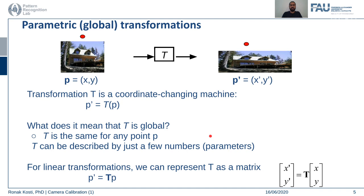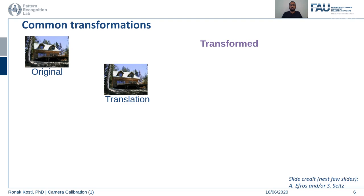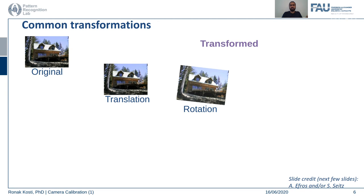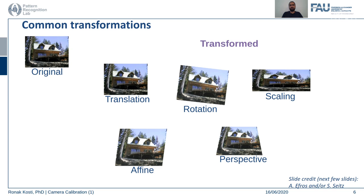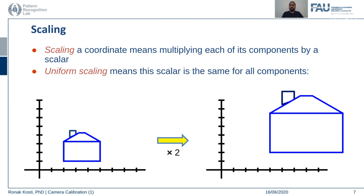There are various forms of transformation. Translation shifts the image in x or y by certain values. Rotation is quite simple to understand. Scaling scales the x or y dimensions of the image. Affine is a combination of translation, rotation, scaling, and some shear values. Perspective transformation — where the camera captures 3D into 2D — is generally considered a perspective transformation.